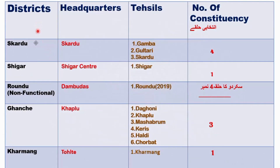The districts in Baltistan Division are: Skardu, Shigar, Randu (which is non-functional), Ghanche, and Karmang. Skardu, Shigar, Ghanche, and Karmang are functional; Randu is the only non-functional district. Headquarters: Skardu's is Skardu, Shigar's is Shigar Center, Randu's is Drambudas, Ghanche's is Kapilu, and Karmang's is Tolti.